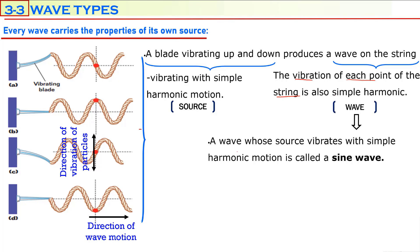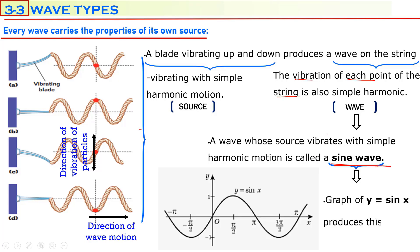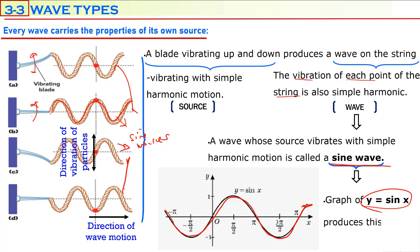A wave whose source vibrates with simple harmonic motion is called a sine wave. It is called a sine wave because the shape of the wave produced on a vibrating string is very similar to the sine function — y equals sine x. All these waves can be produced by a vibrating source with simple harmonic motion. The blade must vibrate with simple harmonic motion, and then the shape of the rope is going to be a sine wave.